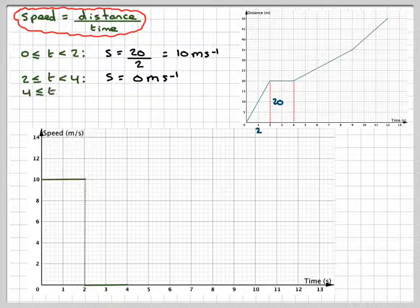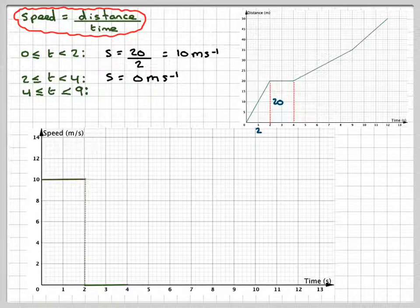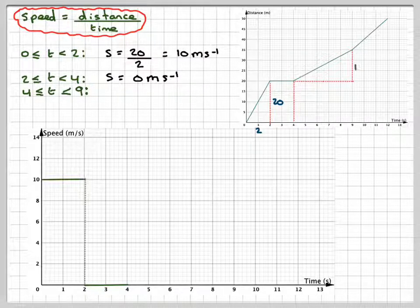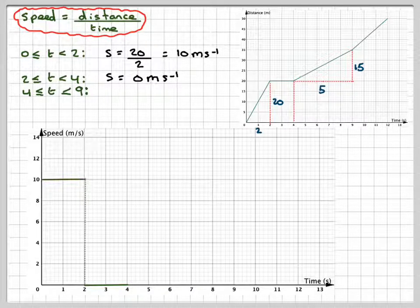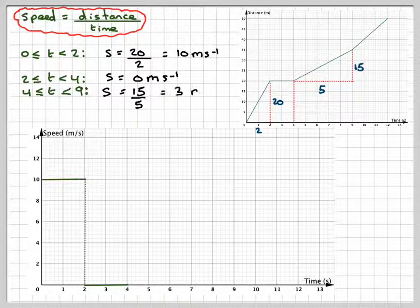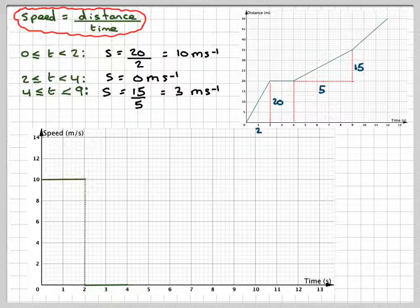For the next part, from 4 to 9 seconds, we need to consider the slope here. Draw that little triangle in and read off the scale correctly. This is 15, and this is 5. Therefore the speed will be 15 divided by 5, which is 3 meters per second.